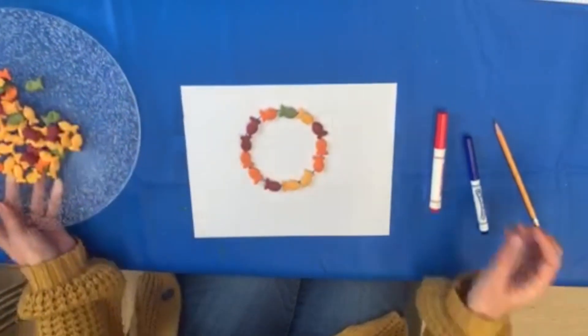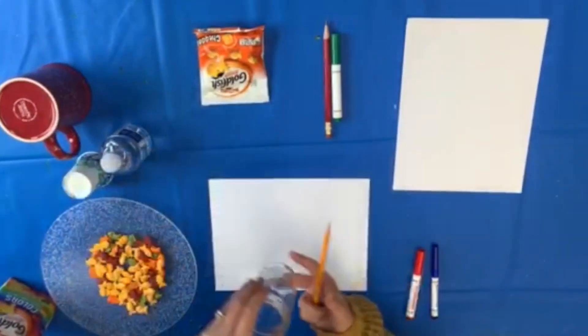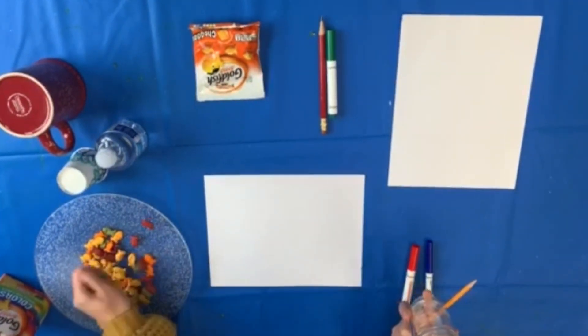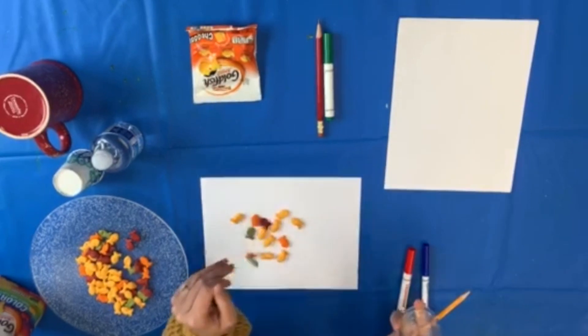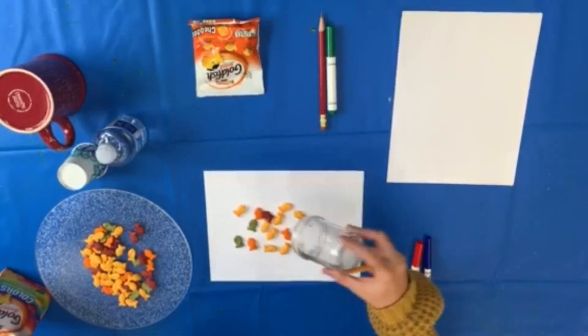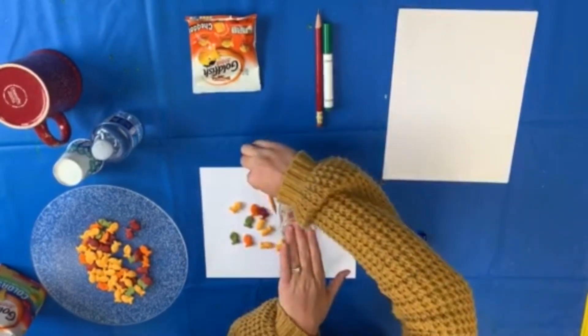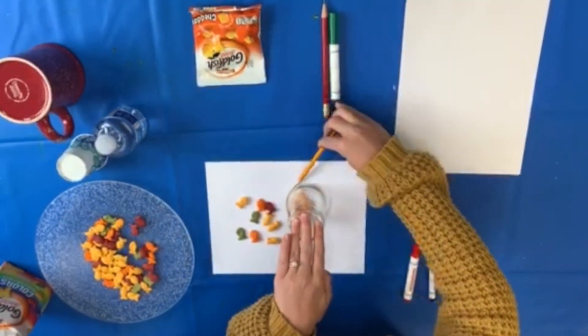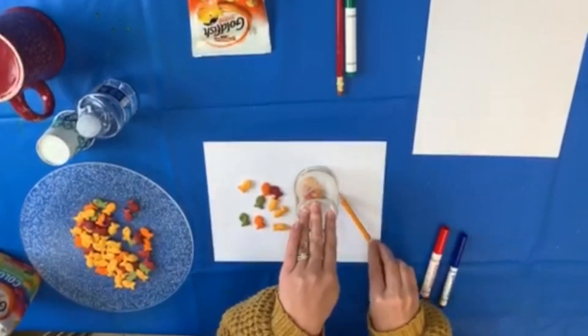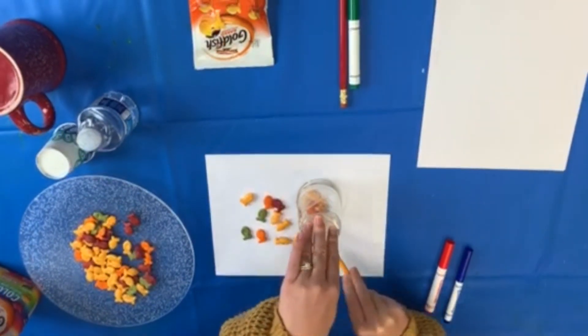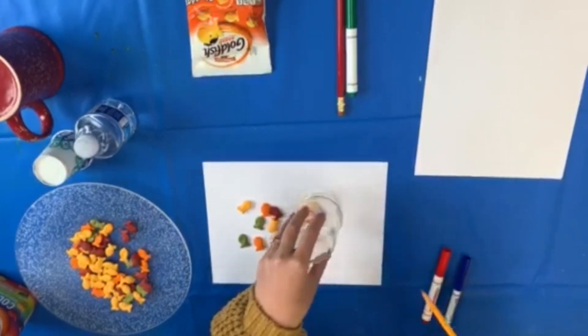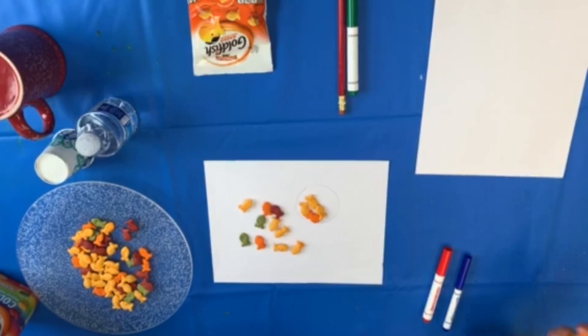Another way you can do this is take a handful of goldfish, put it on the paper, take your cup, and see how many you can catch. Then take a pencil and go around, just like we did before, all the way around, and open up and see how many goldfish did I catch today.